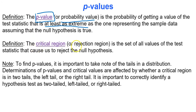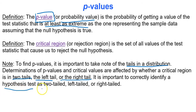The critical region or rejection region is the set of all values of the test statistic that cause us to reject the null hypothesis. To find p-values, it's important to take note of the tails in a distribution. Determinations of p-values and critical values are affected by whether a critical region is in two tails, the left tail, or the right tail. It is important to correctly identify a hypothesis as being two-tailed, left-tailed, or right-tailed.